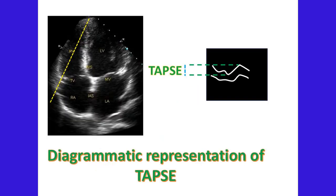Tricuspid annular plane systolic excursion (TAPSE) is another measure of right ventricular systolic function. It can be measured in the four-chamber view using M-mode echocardiography. TAPSE is a measure of right ventricular longitudinal function. The normal value is usually above 15 mm. It is a highly load-dependent measure and optimal alignment of the ultrasound beam can be challenging.